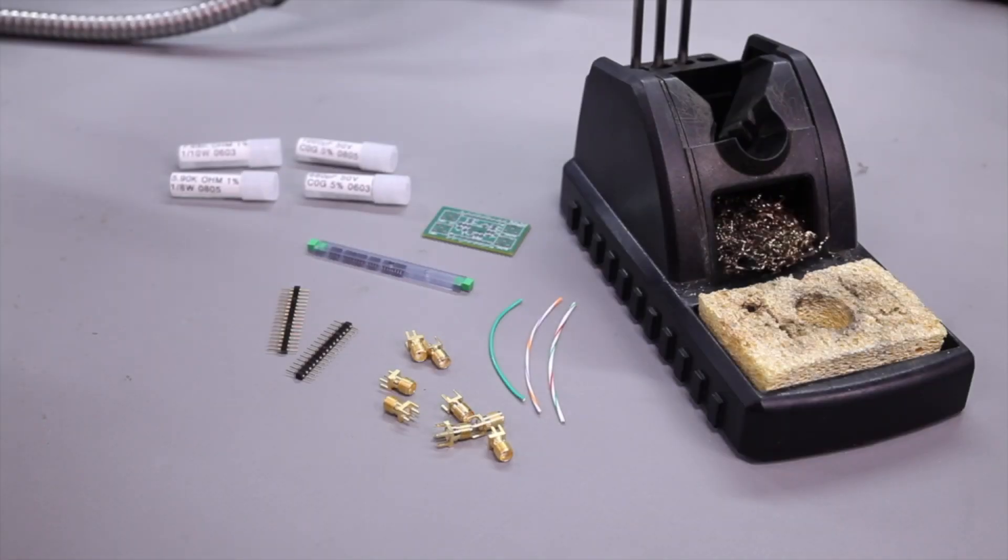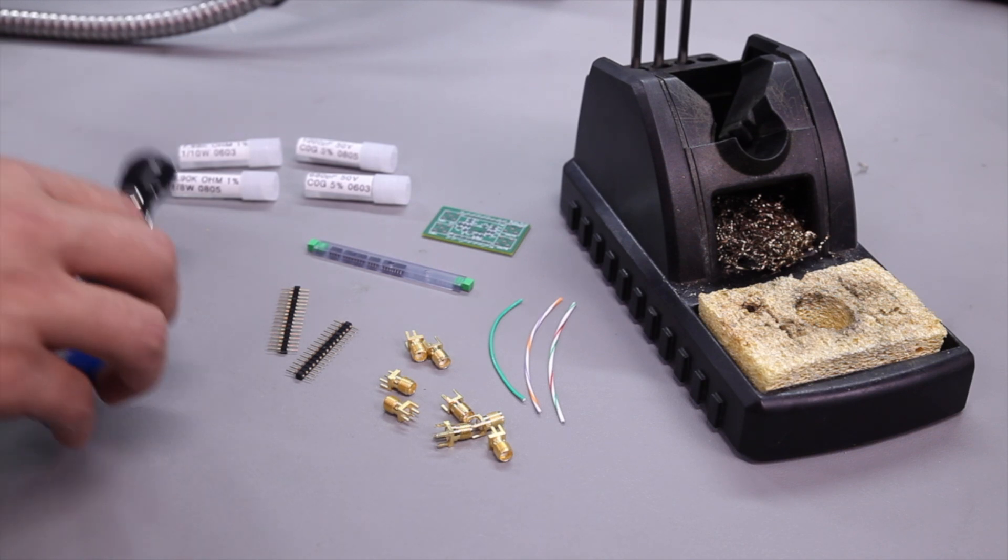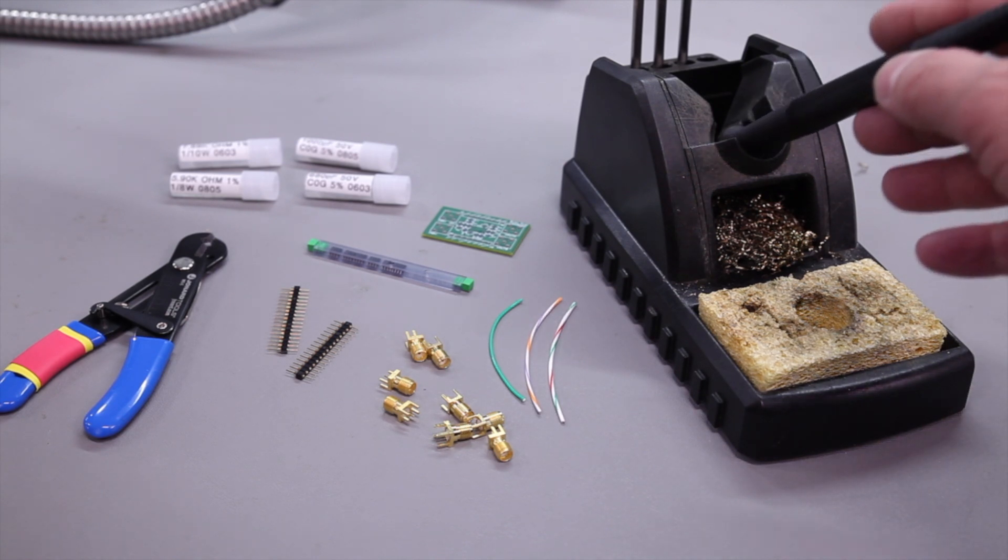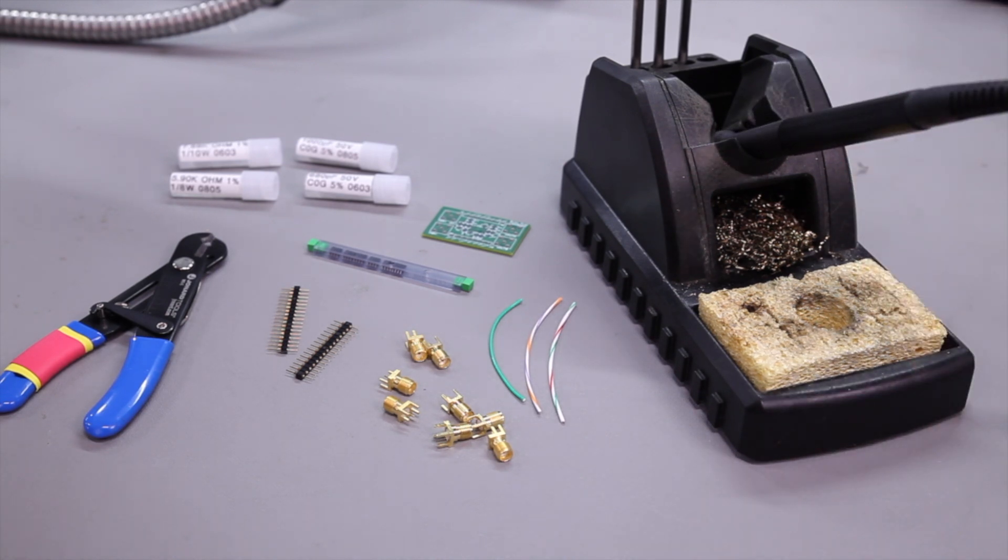Now it's time to collect your supplies: the op-amp you want to evaluate along with your discretes, wire cutters, included header strips, any other SMA connectors or wires you want to use, and a soldering iron or pen.